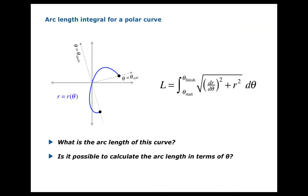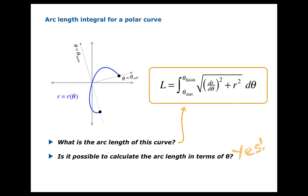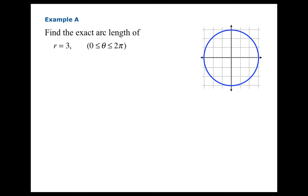So that's the answer to our question: we have an integral formula for the arc length, and yes, it is possible to calculate in terms of theta — all the gadgets on the right-hand side of this formula are functions of theta. Let's take a look at an example. Circle of radius 3: R equals 3, theta goes from 0 to 2π.